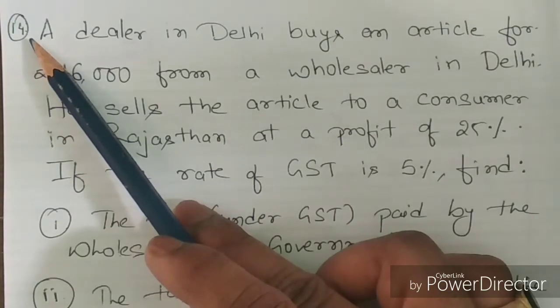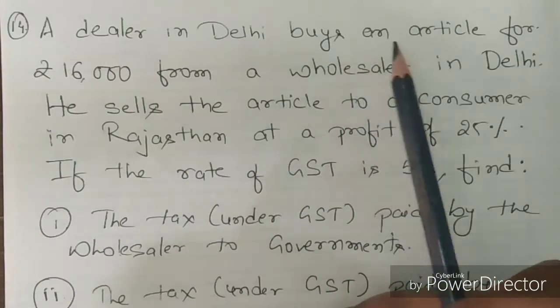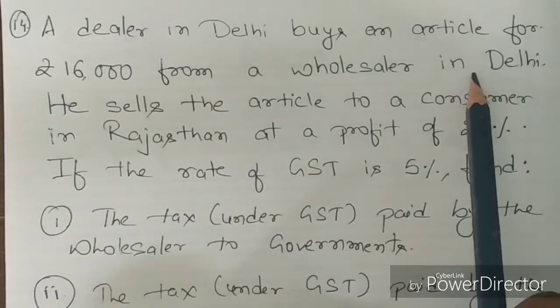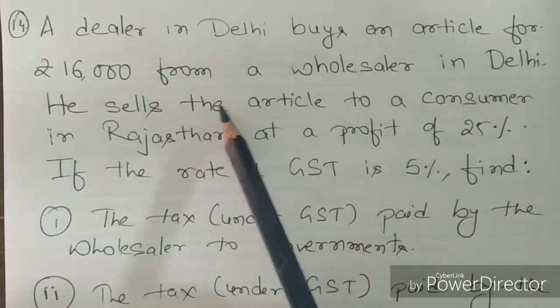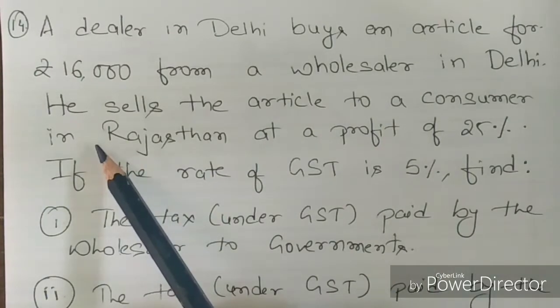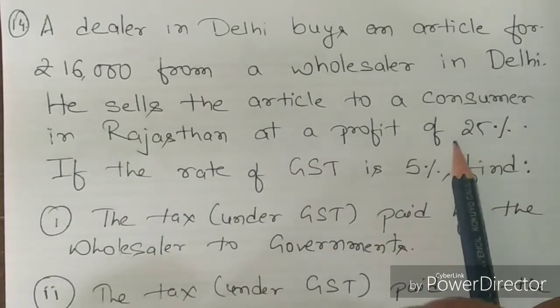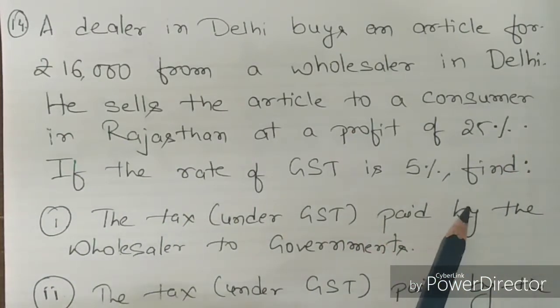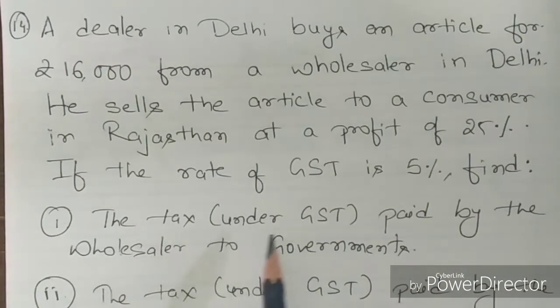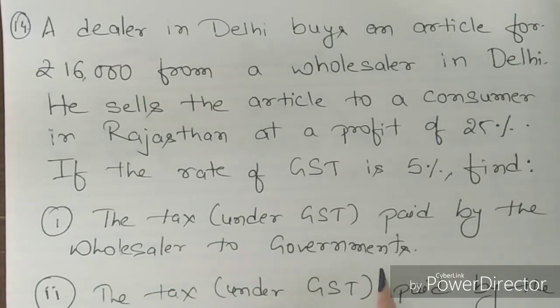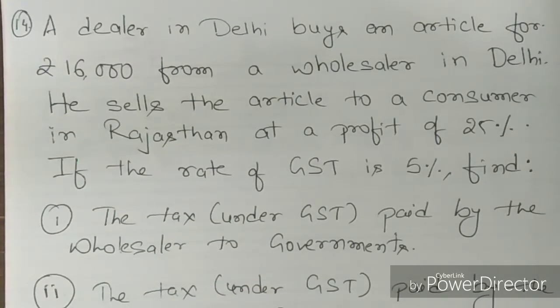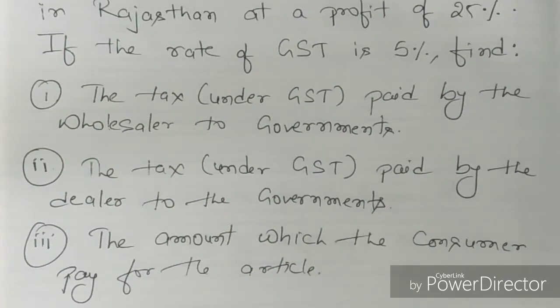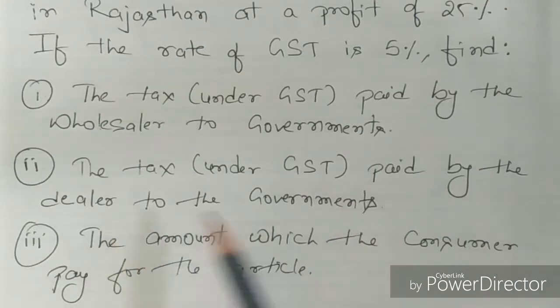Question number 14: A dealer in Delhi buys an article for Rs 16,000 from a wholesaler in Delhi. He sells the article to a consumer in Rajasthan at a profit of 25%. If the rate of GST is 5%, find the tax under GST paid by the wholesaler to the government and the tax under GST paid by the dealer to the government.